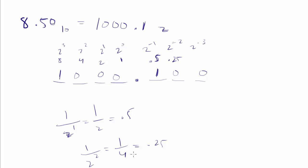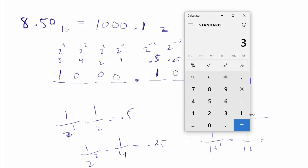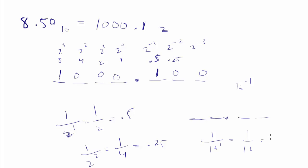That's how we handle floating point numbers in conversions. We could do a hexadecimal example, and it's going to be the same thing. The only thing that gets tricky in hexadecimal is that when you get 16 to the negative 1, you take the inverse of the positive number — that's going to be 1 over 16, which is 1 sixteenth, and 1 divided by 16 gives you 0.0625.